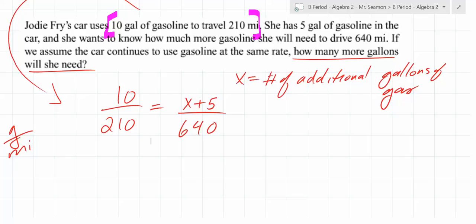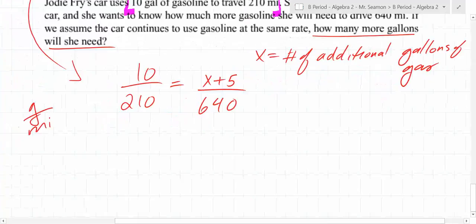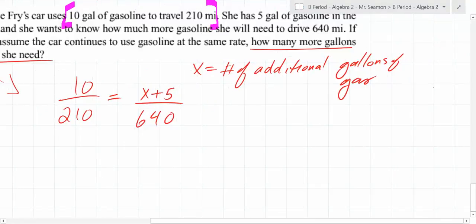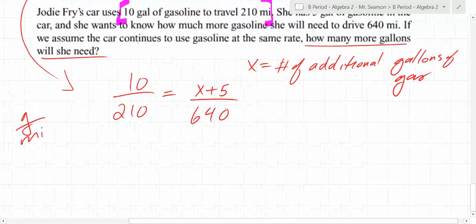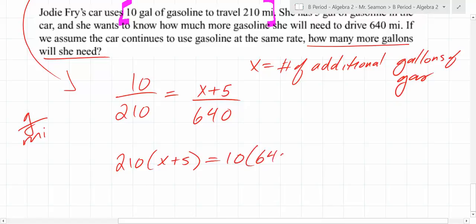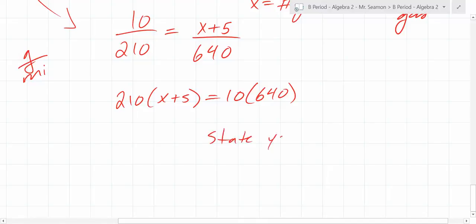I would think that you would want to find what it would be normally and then subtract 5. Or you do it this way. Either way is fine, but that would be clear to me if you labeled your variable. This x is the number of additional gallons of gas. You could, if you wanted, write x is the amount of gas she needs, and the amount of gas she puts in is 5 gallons less than that. That's correct. But you can just do it this way instead. What do you do if your fraction equals a fraction? Cross multiply. 210 times x plus 5 equals 10 times 640. Do you feel confident that you could finish that? Yeah. So then after you get it, you state your answer, and if you have time, what should you do? Check it.